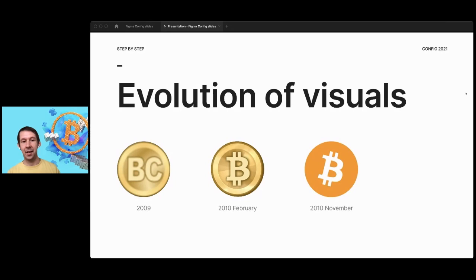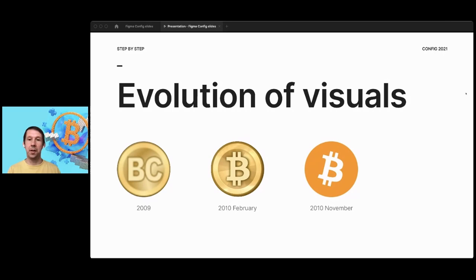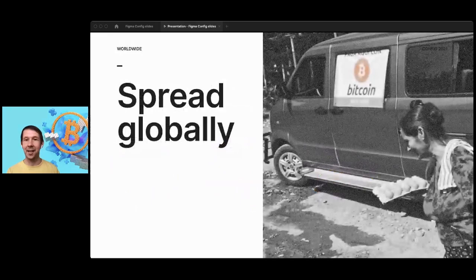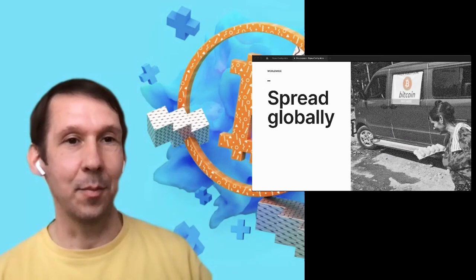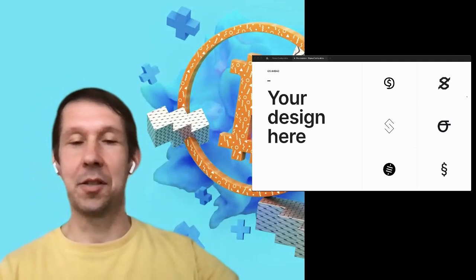The Bitcoin logo started in 2009 with a little 'BC' on a golden coin, created by Bitcoin's original creator. Then an update used the Thai baht symbol merged with the golden coin idea. About nine months later, a different unknown person appeared in the Bitcoin Talk forum and posted a new design — the Bitcoin symbol we know today with the orange color and 14-degree tilt — saying 'feel free to use it any way you want.' The internet hive mind decided this was it, and it was simply adopted.